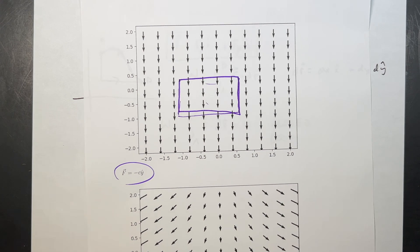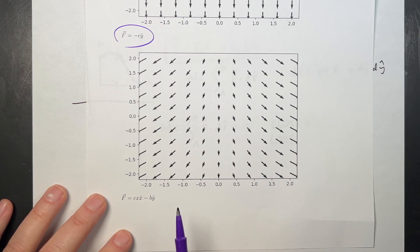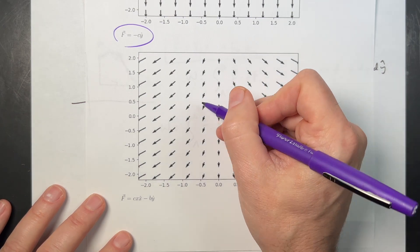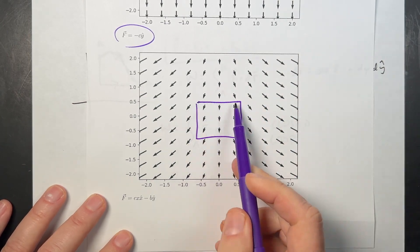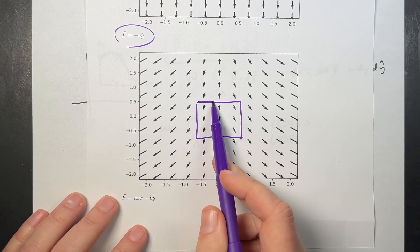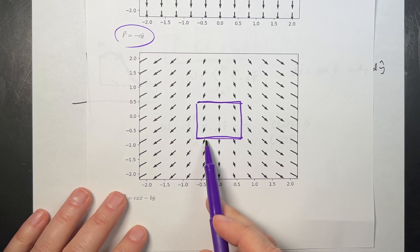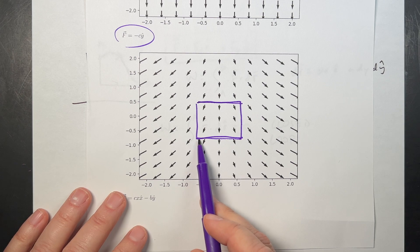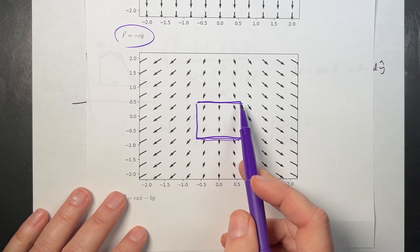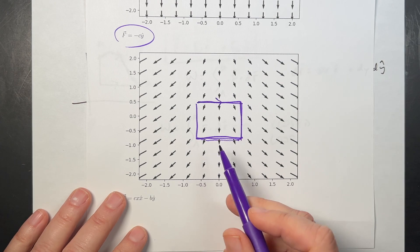Here's another one: F equals cx x-hat minus b y-hat, so there is a change in the x direction but not in the y direction. If I pick a box, the y component is constant, so those horizontal paths have some work done. But the x component along the two vertical paths is symmetric, so the work along each is zero, and I think this one is conservative.